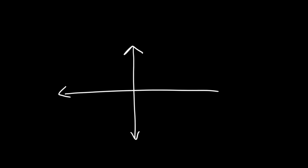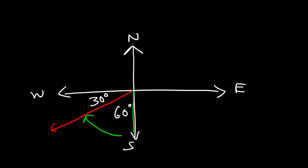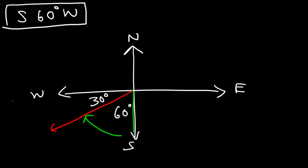Let's work on another example — find the bearing. We shouldn't use the angle that's not adjacent to the north-south line; we need to use 60 degrees. Relative to the south line, we travel 60 degrees west to reach the red direction vector, so the bearing is south 60 degrees west. Remember: the first letter should be north or south, and the second letter should be east or west.